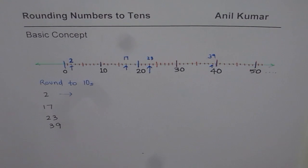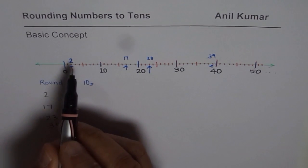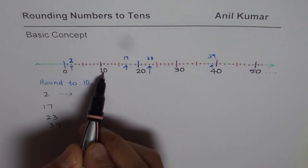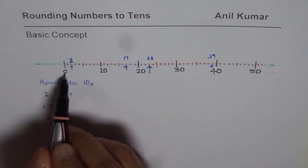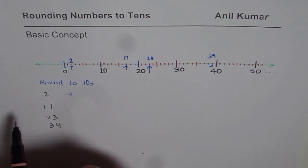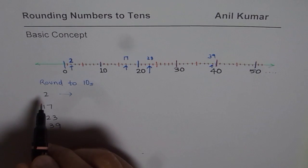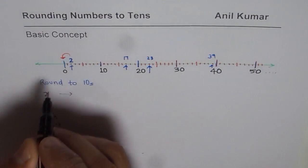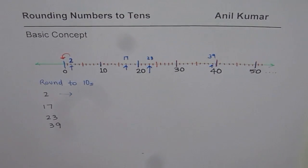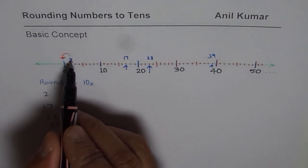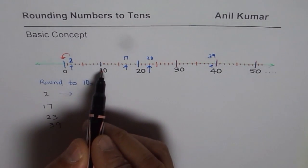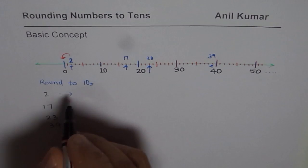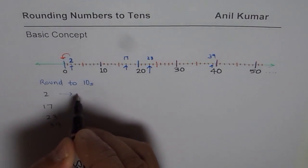We basically check each number. Let us say number 2. 2 is between 0 and 10. So it could be rounded to 0 or to 10. Then what should it be rounded to? Since it is close to 0, we prefer to round it to 0. We should not round it to 10. 10 is a very big number as compared to 2. 0 is closer to 2. And therefore, 2 is rounded to 0.